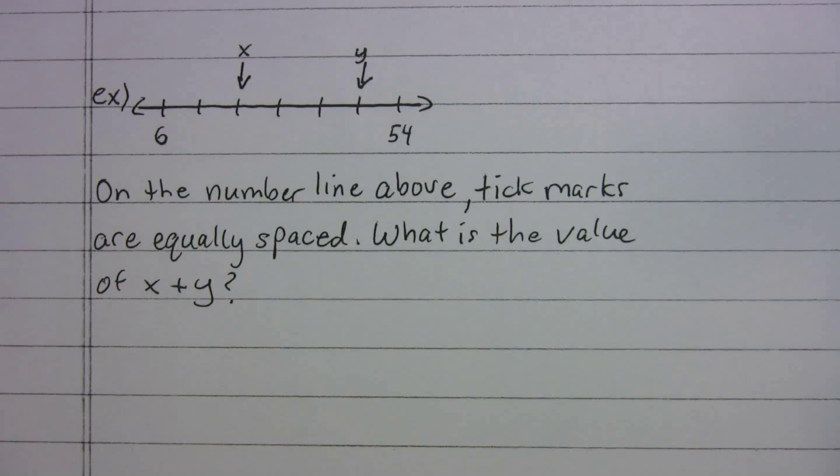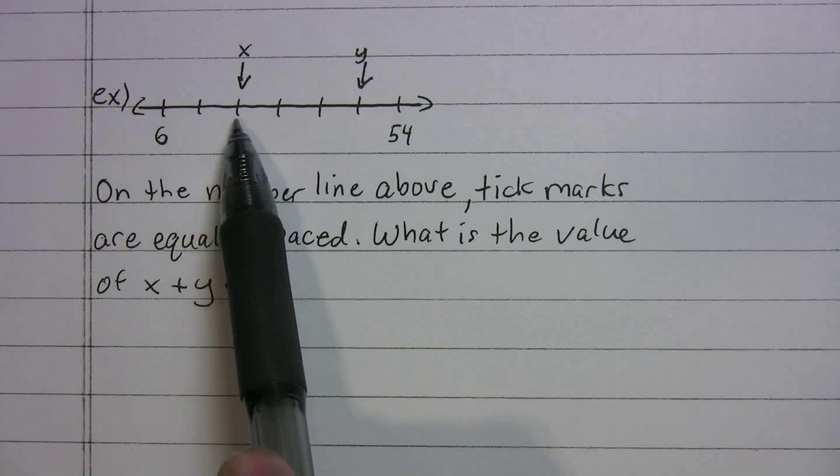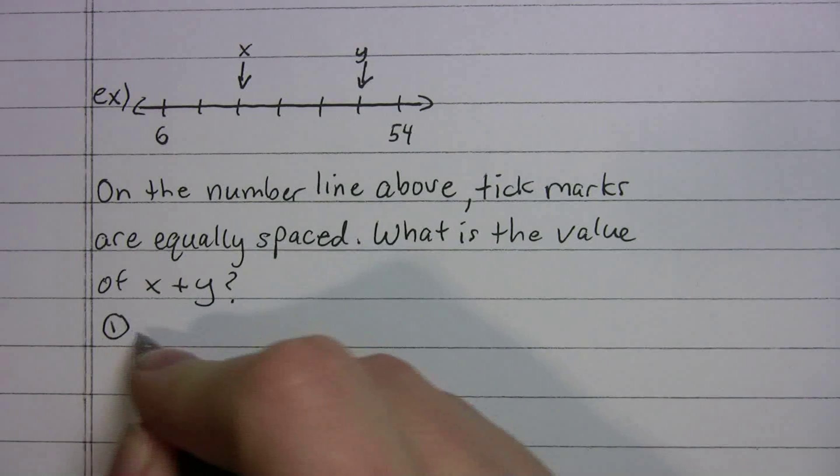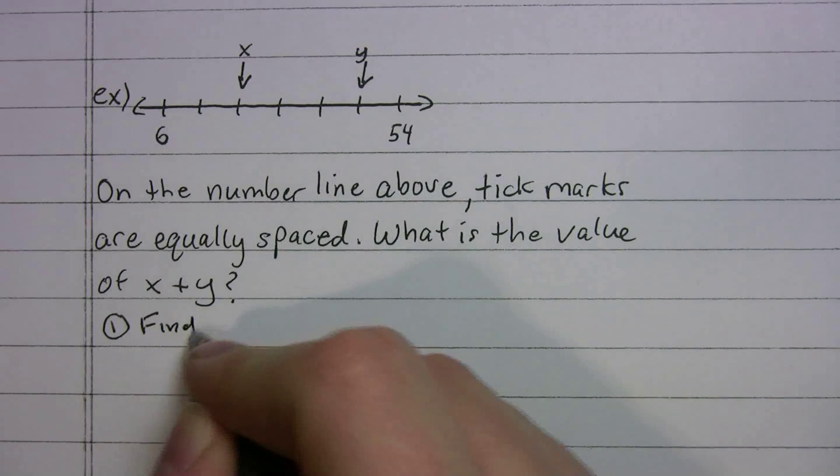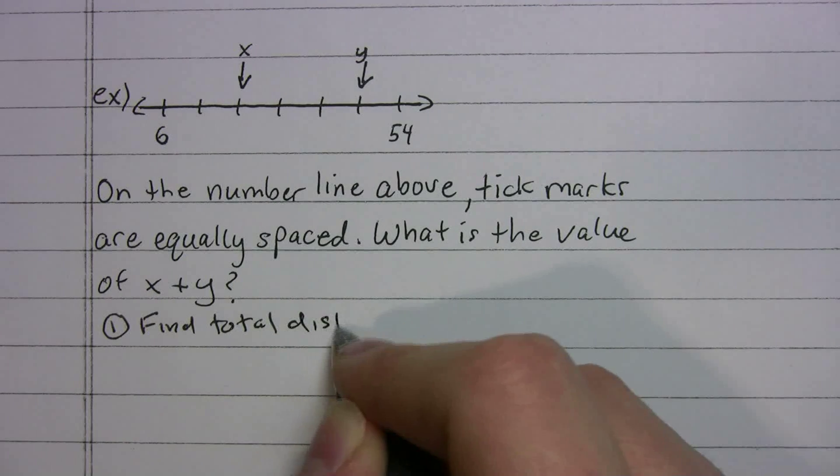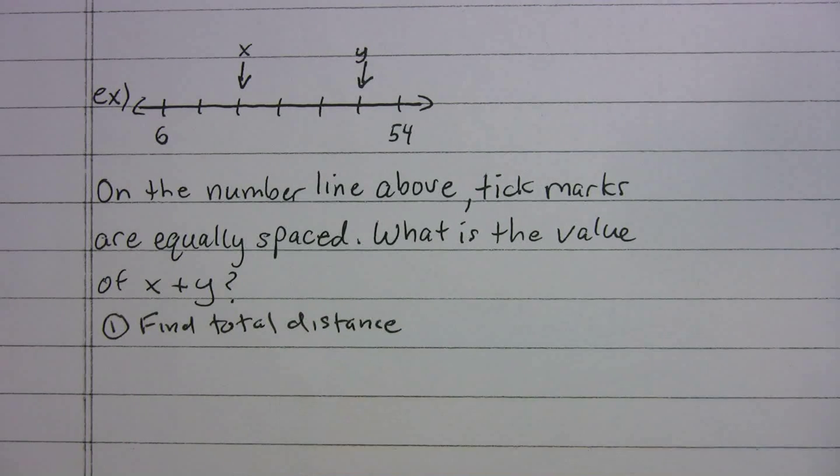So I'd say this is a question I've seen pop up a few different times. And something you have to be able to do is to figure out the values of these tick marks. So how do you do that? Let me give you an approach. First thing you're going to do, you're going to find the total distance. That's job number one.